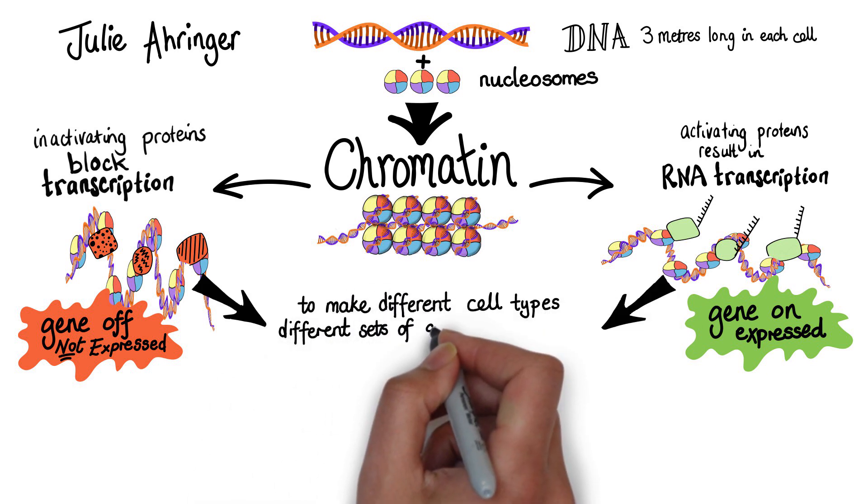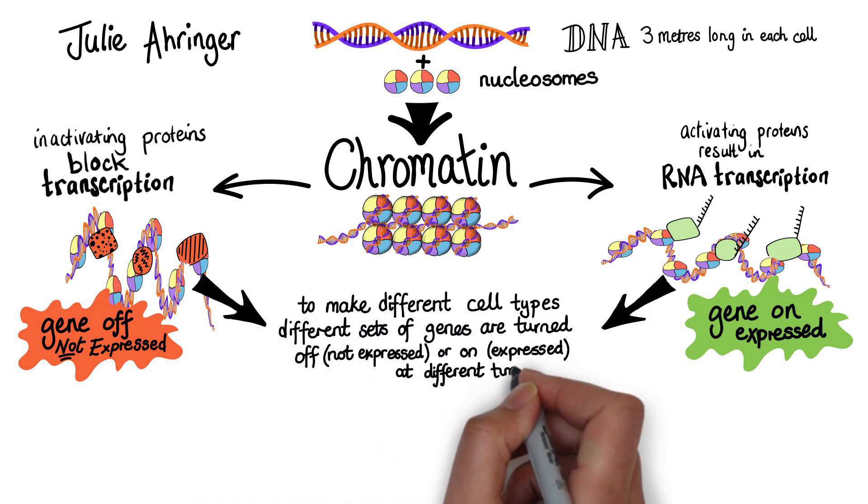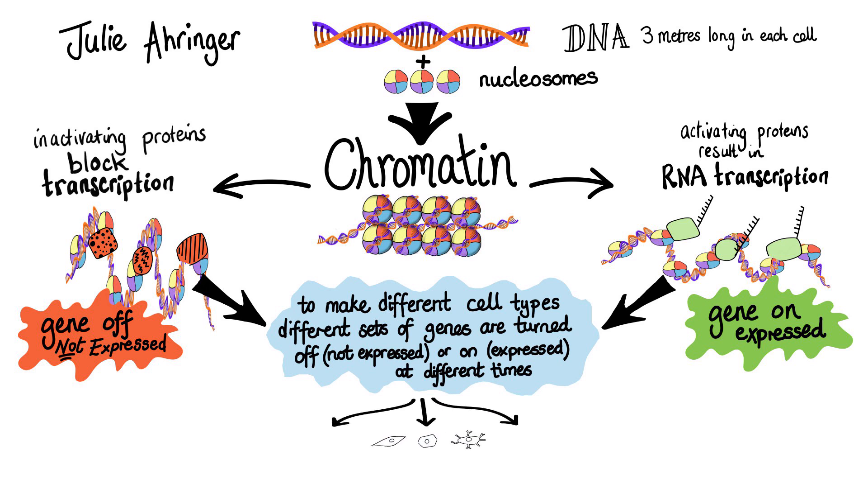To make different cell types, different regions of DNA are bound by the activating or inactivating proteins, resulting in different sets of genes being expressed.